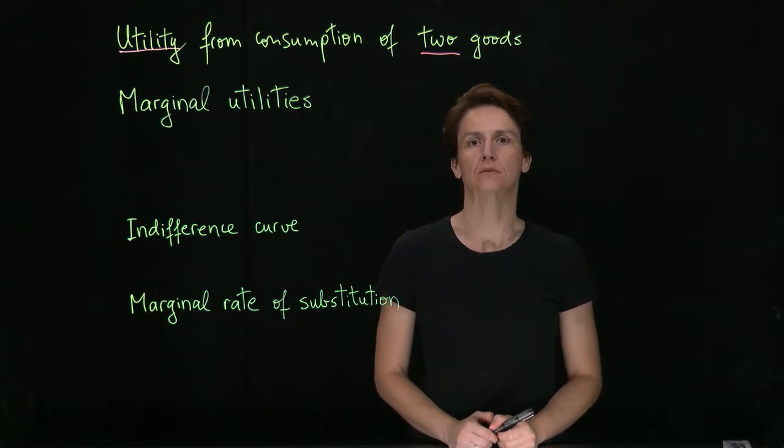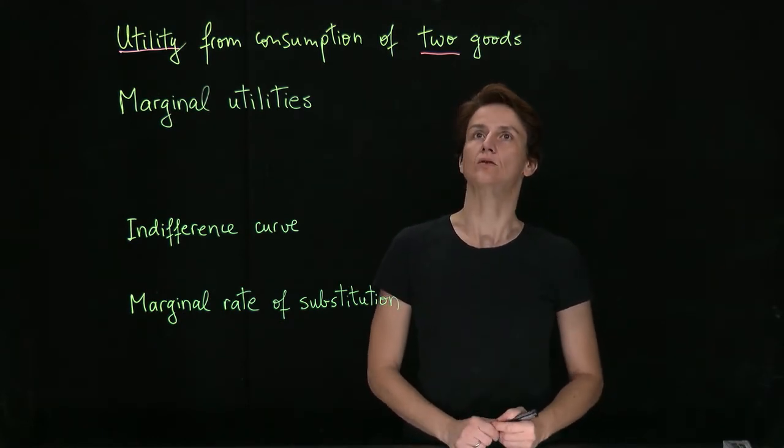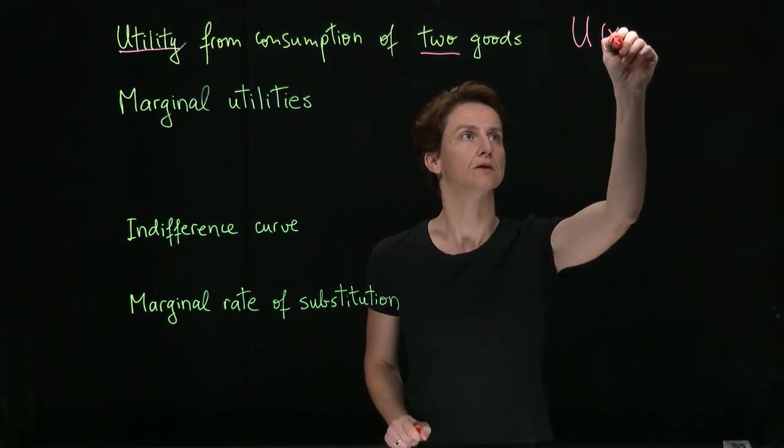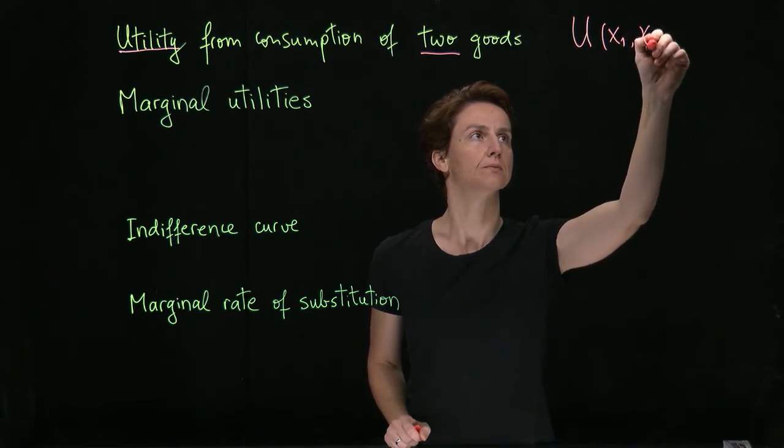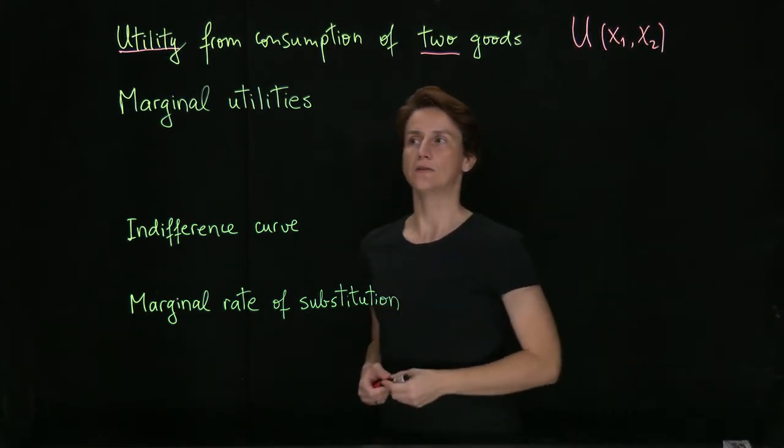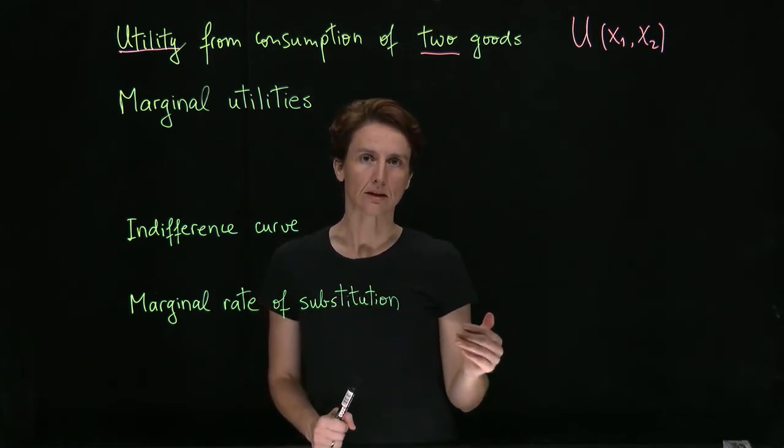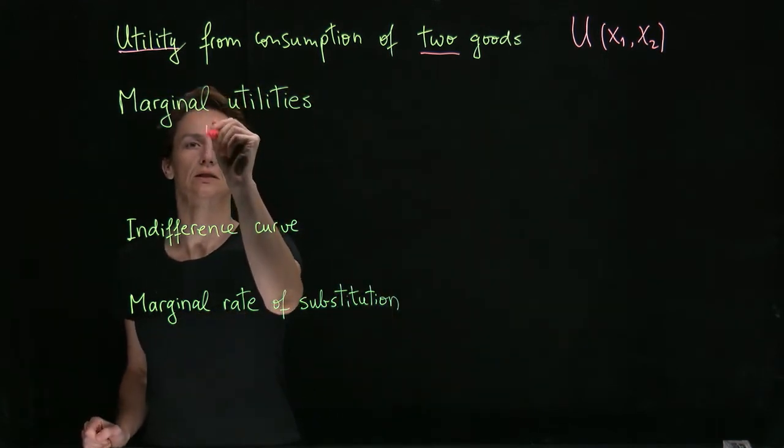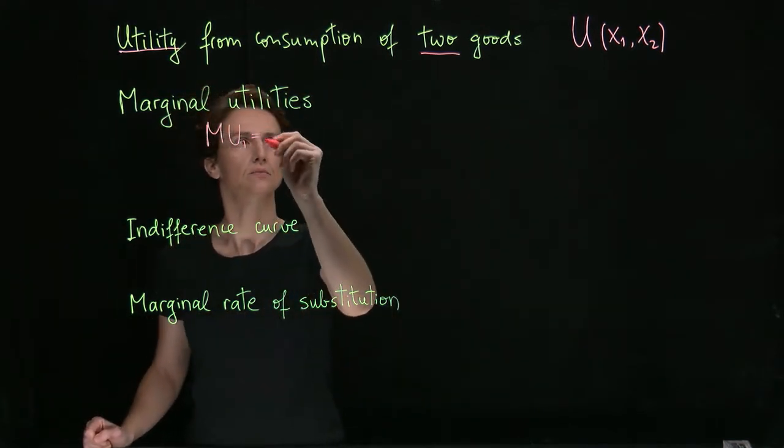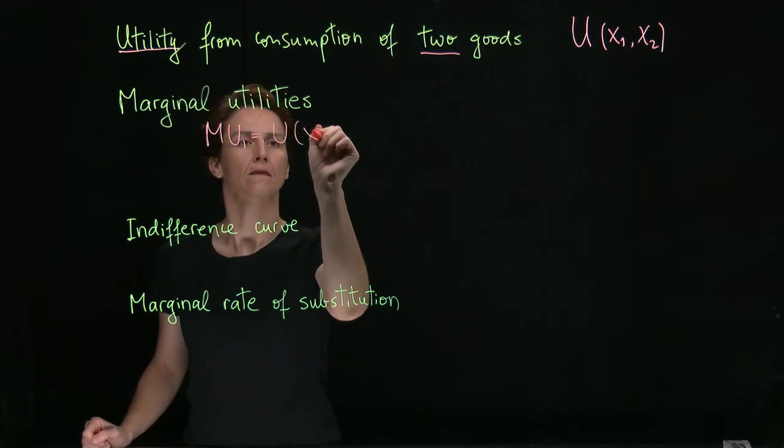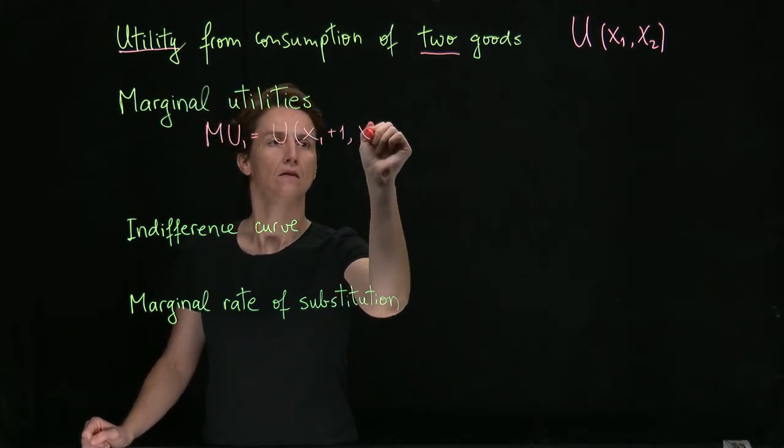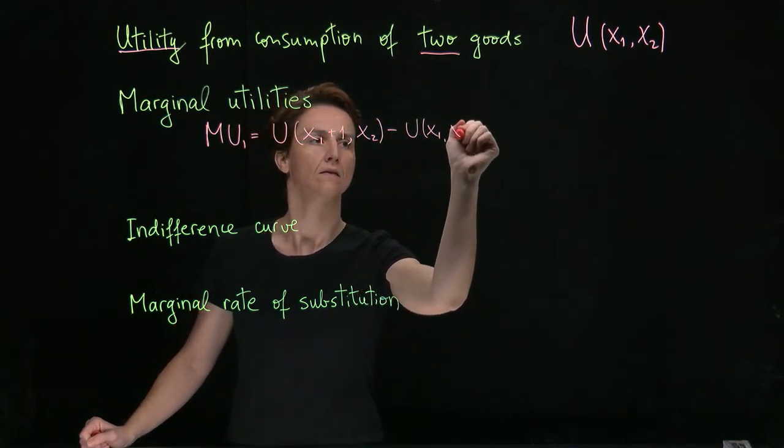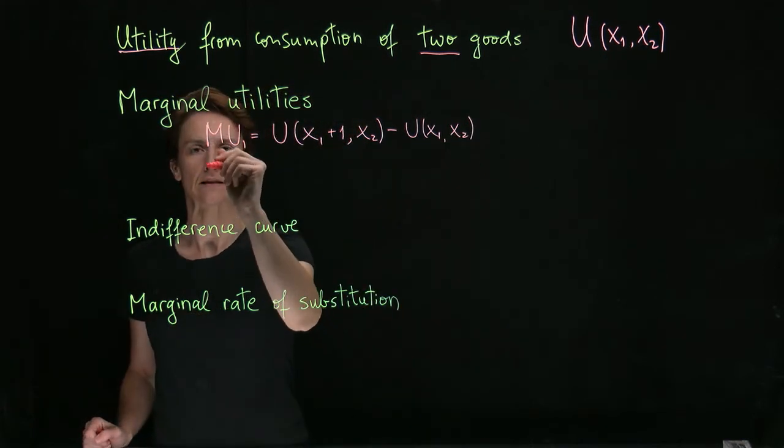Next, let's discuss preferences from the consumption of two goods. So if we use x1 and x2 to indicate quantities of the two goods, then utility will be a function of both variables. And again, we can define marginal utilities as the increase in utility when we increase the quantity of that good by one. So marginal utility of good one will simply be, and the same for good two.